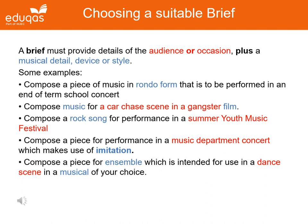You will have a choice of four set briefs issued by the board and you will need to choose one. For the free composition, you must respond to a different brief and you can make up your own. The brief must be written for an occasion or a particular type of audience, and you must aim to include some kind of specific musical detail in the brief, such as a device, a musical style or a type of structure.